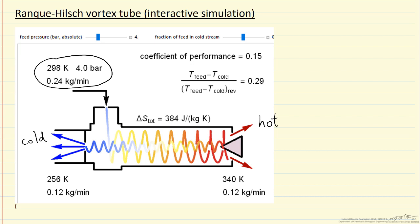We can change how much is cold gas and how much is hot gas by changing the slider up here. We also can change the feed pressure, and both of these things will affect how cold the cold gas is and how hot the hot gas is.